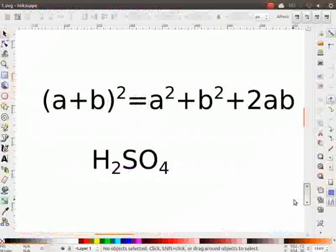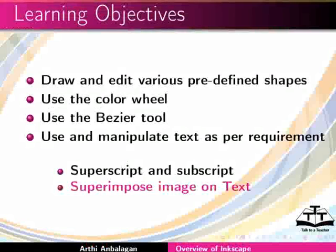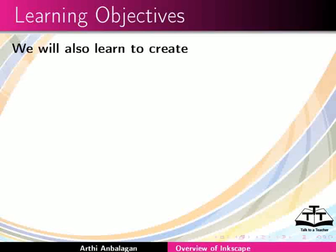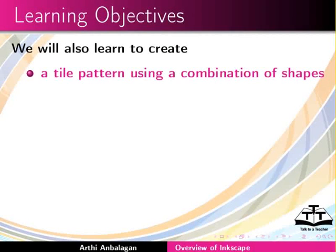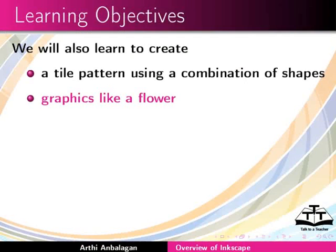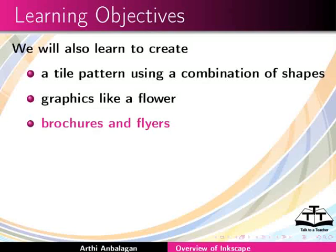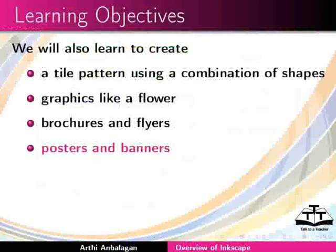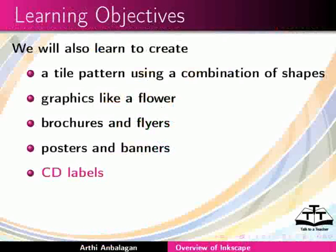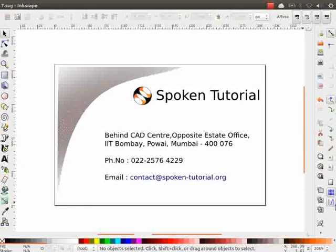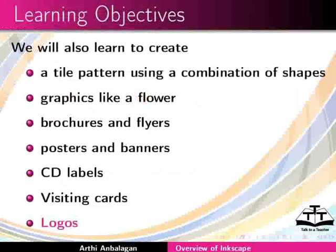For example, superscript and subscript, and superimpose image on text. In this series, we will also learn to create a tile pattern using a combination of shapes, graphics like a flower, brochures and flyers, posters and banners, CD labels, visiting cards, logos and many more.